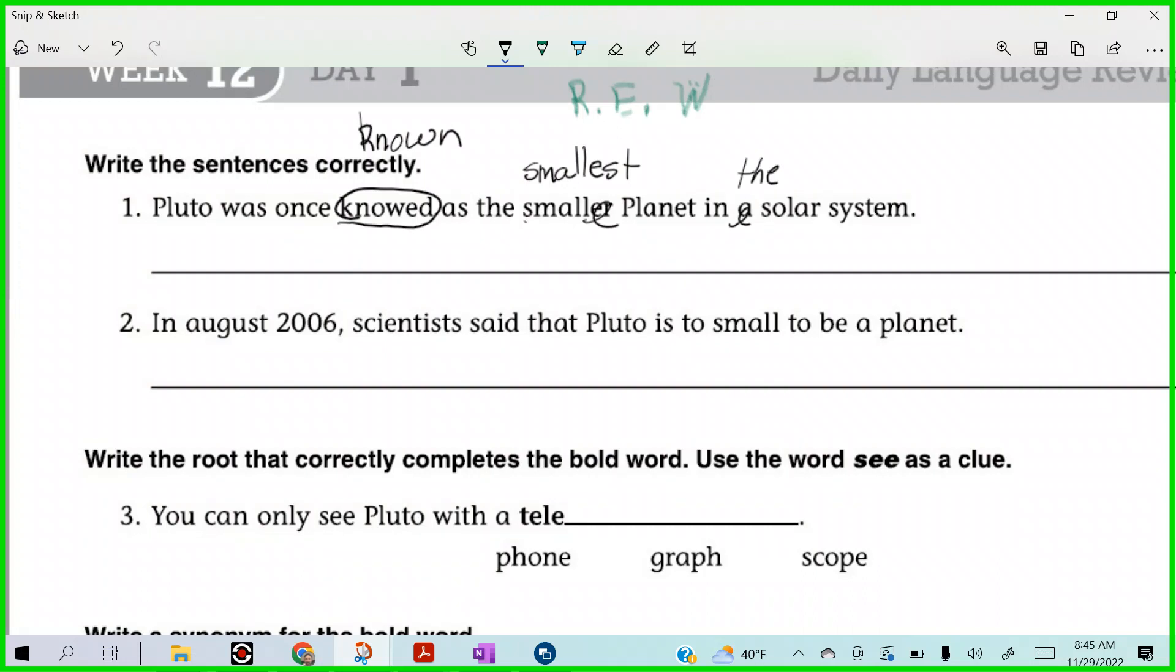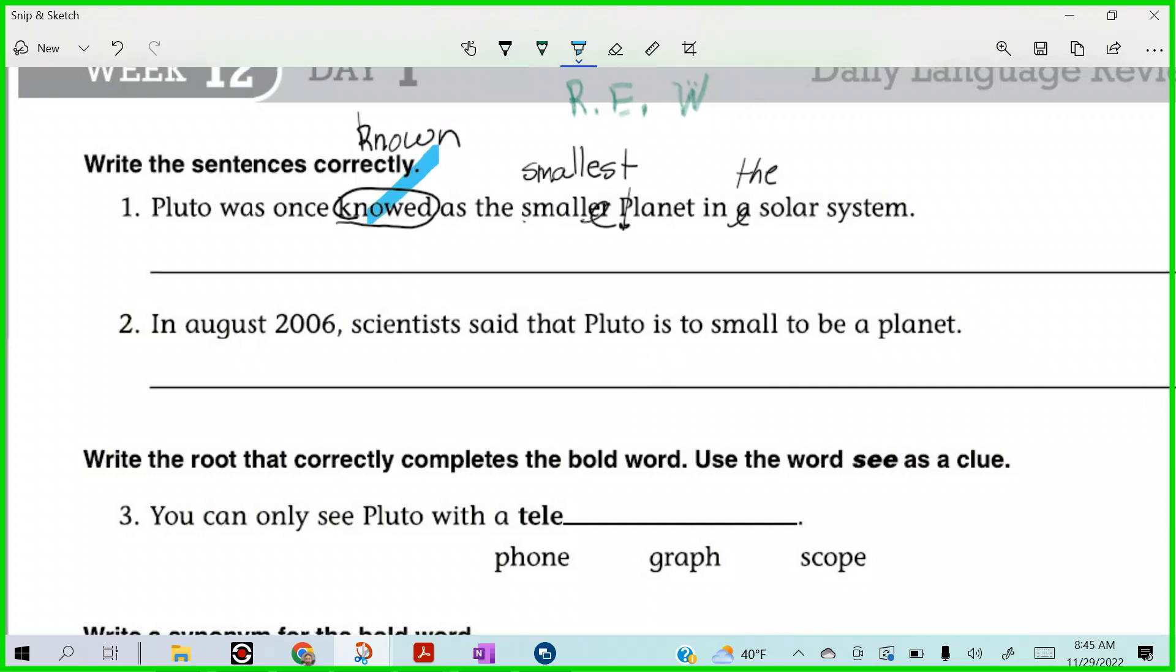There's one more mistake here. Vinny? P in planet should not be a capital. Planet is a common noun. So, good job, Vin. That was a tough catch. One, two, three, four. Four corrections. Four corrections in that.